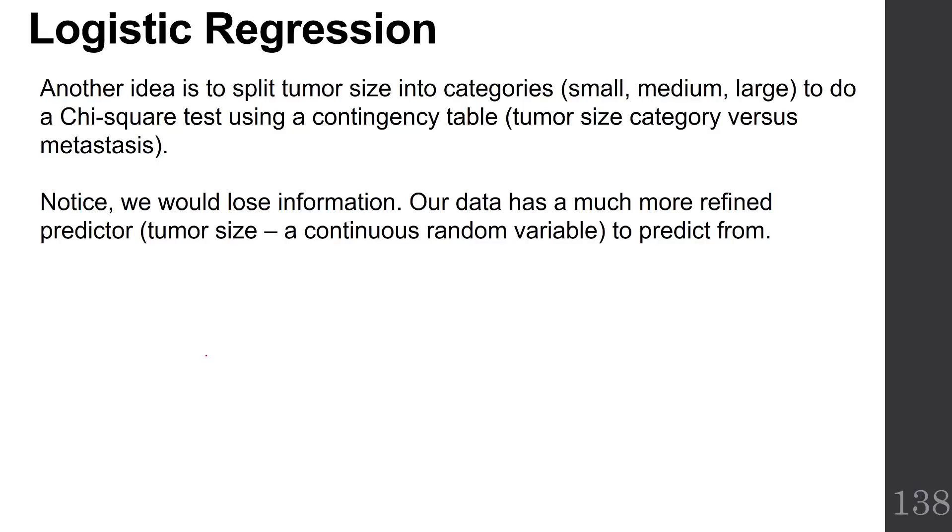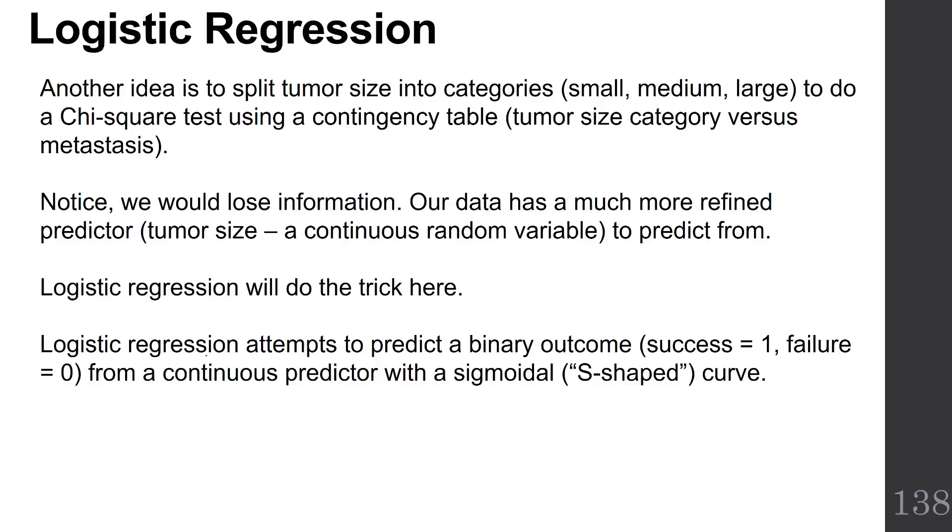Another idea is to split tumor size into categories like small, medium, and large, and do chi-squared tests using a contingency table. But we would lose valuable information. Our data has a much more refined predictor, tumor size as a continuous random variable. So logistic regression is the trick we want.